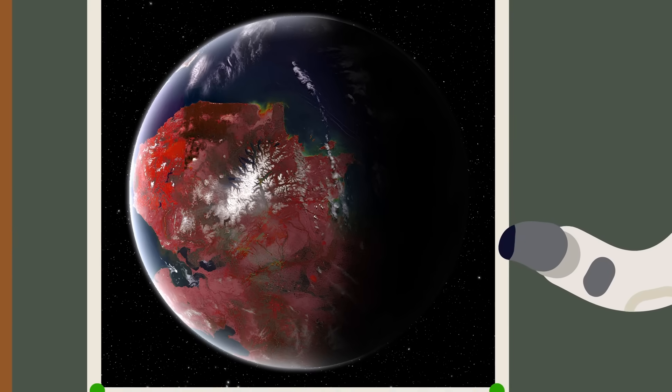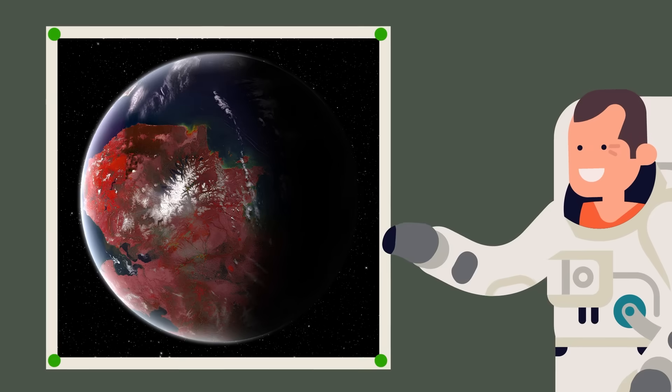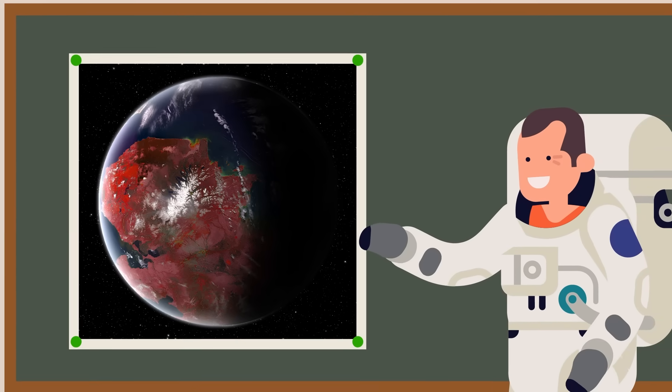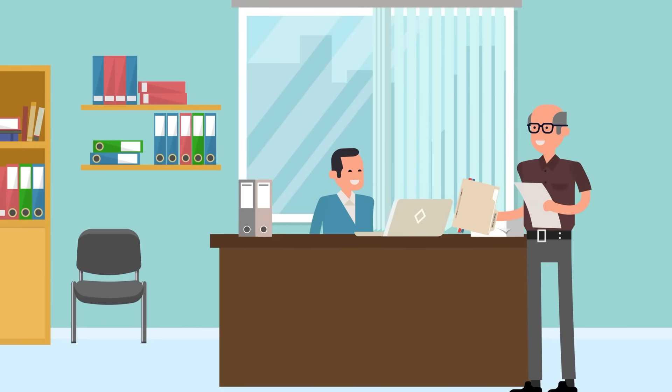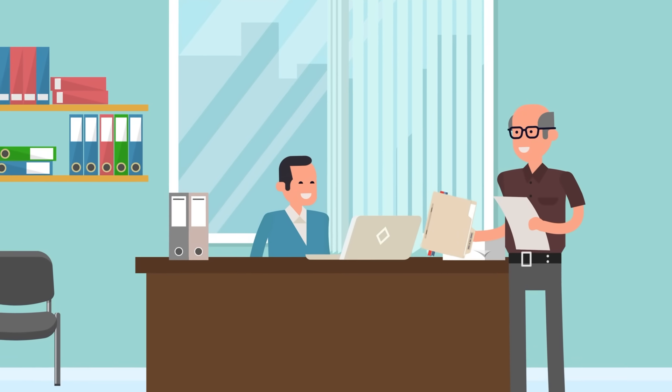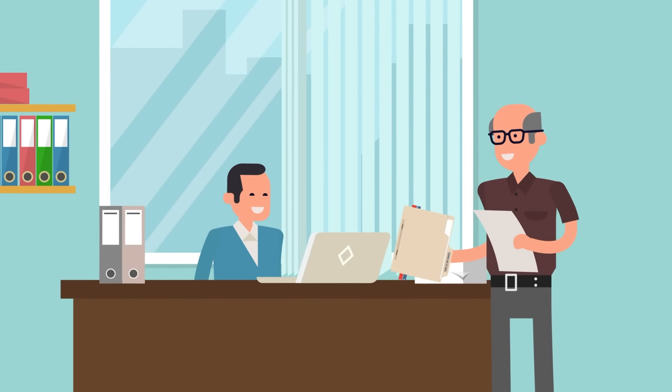These planets, known as super-habitable planets, are exoplanets, or planets outside of our solar system that could hypothetically be even better at supporting life than Earth. The concept of super-habitable planets was first introduced by Renee Heller and John Armstrong in 2014, and since then they've become a hot-button topic in astronomical circles.